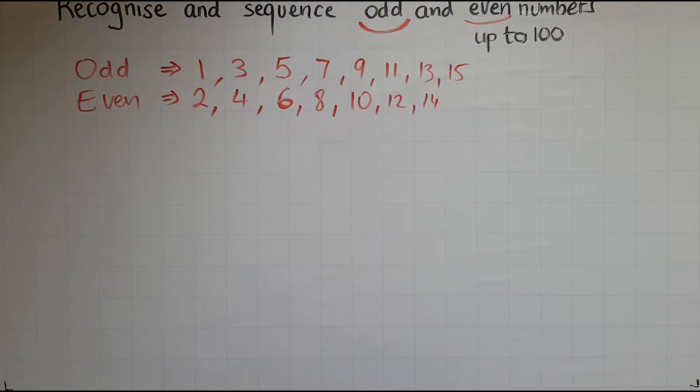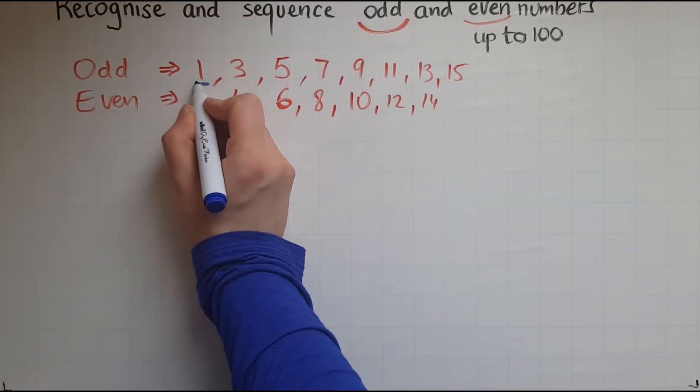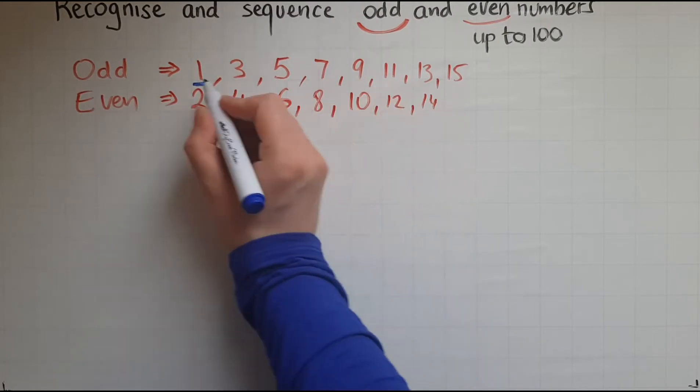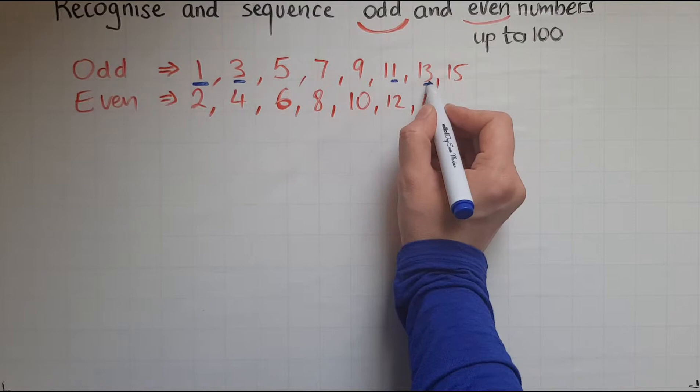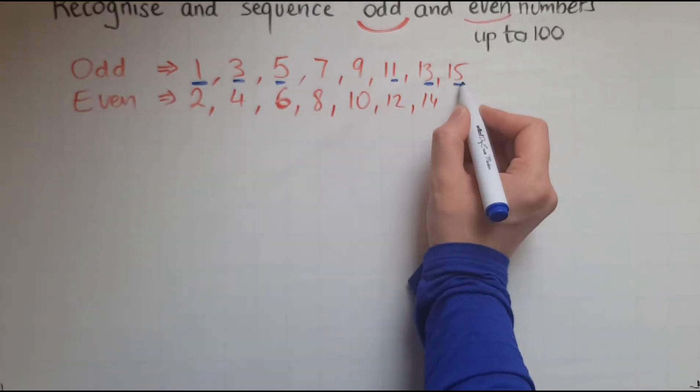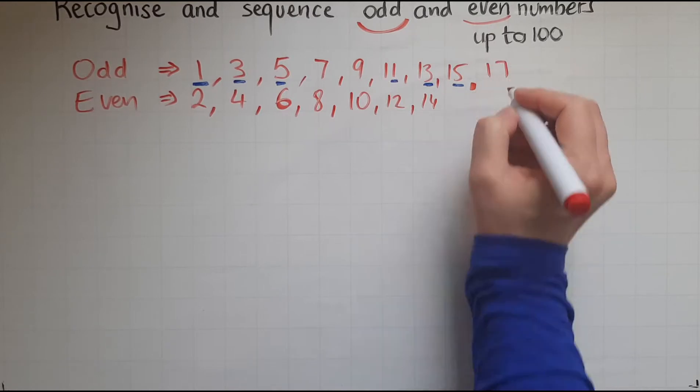If you look at the numbers, the odd numbers: 1, 11, 3, 13, 5, 15, 7, 17.